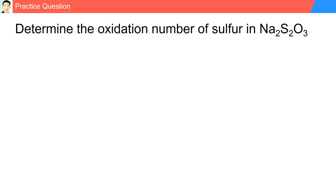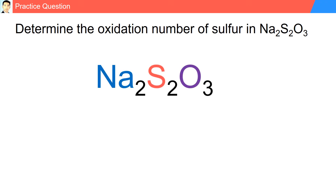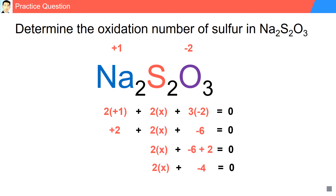Practice question: determine the oxidation number of sulfur in Na₂S₂O₃. Sodium is found in Group 1, so it has an oxidation number of plus one; there are two sodiums. Oxygen has an oxidation number of minus two and there are three oxygens. With two sulfurs, the total sum must equal zero. Solving for sulfur, it is equal to plus two.